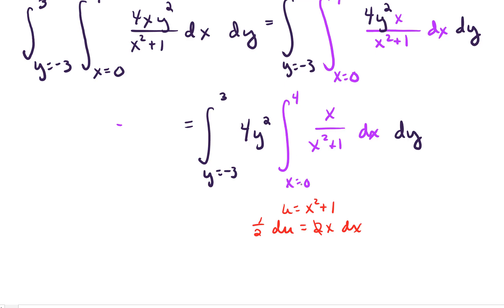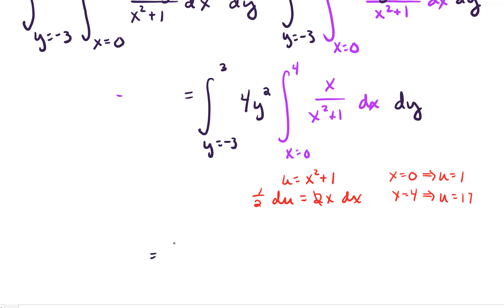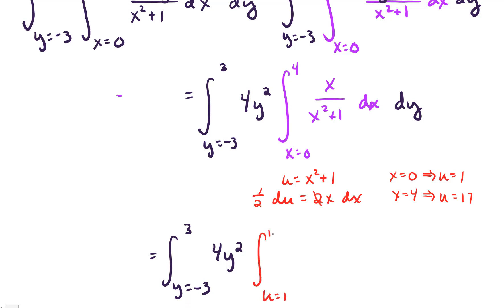I want to keep track of the limits: when x equals 0, u equals 1; when x equals 4, u equals 17. So we now have the integral from u equals 1 to 17. Substituting x dx with (1/2) du and x² + 1 with u, we get (1/2) times (1/u) du. I still have a dy on the outside. Combining the 1/2 and the 4, we can pull a 2 all the way out front.